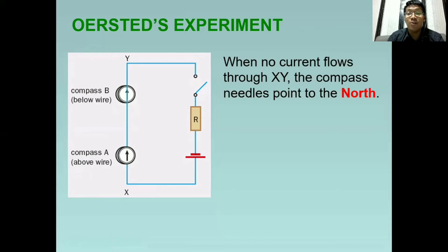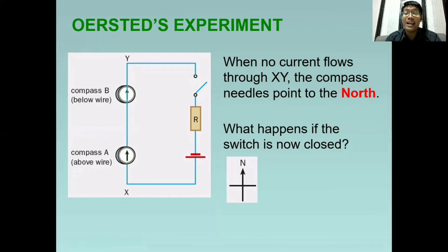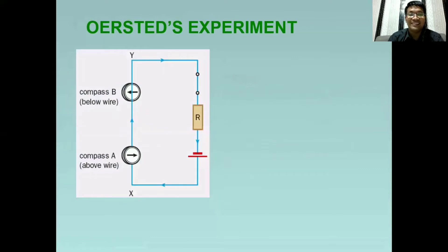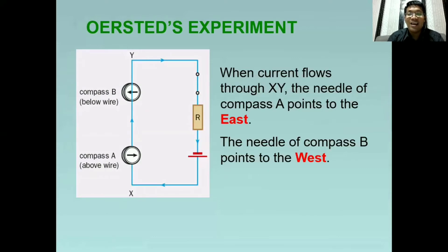When no current flows through X, Y, the compass needles point to the north. Parang ganito. Pero ano kayang mangyayari kapag switch on natin at dumaloy na ang kuryente? This will be the effect. As you can see, once the current flows through the X and Y, the needle of compass A points to the east, while the needle of the compass B points to the west. Tatandaan ulit natin na ang compass A ay nakalagay sa taas ng wire. At ang compass B naman ay nakalagay sa ilalim ng wire. Kaya ang rason kung bakit magkaiba sila ng direction ng pointer.